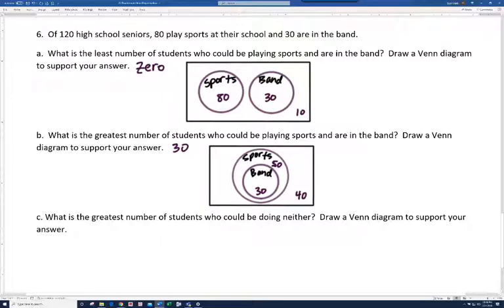Letter C. What is the greatest number of students who could be doing neither? Well, notice in this case, we had 10. In this case, we had 40. The only other relationship you might look at is where we have overlapping sets. But you're going to find you're never going to get less than, or I should say, you're never going to get 40 or more, except for in this situation here. So, the answer is 40. And our diagram is the same. All right. That's it for this video.